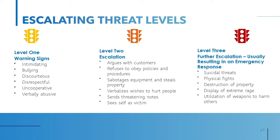Level two is when the situation becomes more escalated and tense. This is when a person might verbally argue and become more heated in their refusal to obey policies and procedures, or if they sabotage equipment or steal property, send or leave threatening notes on your car, or see themselves as a victim. Those are examples of escalated actions that require a proactive response. This is really your last chance to de-escalate the situation.